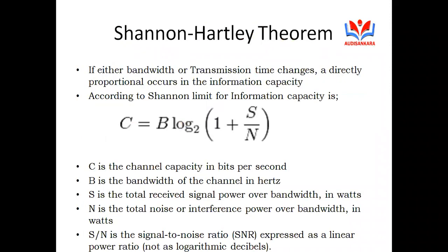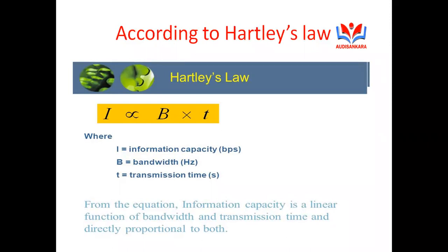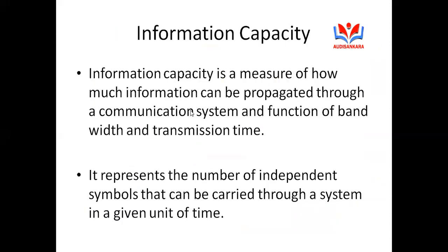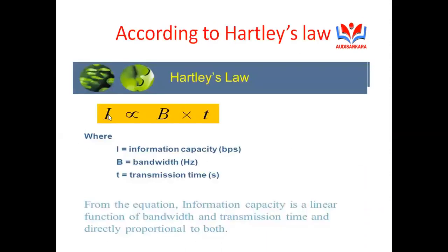The information capacity can be represented in two ways: first, Hartley's Law; and second, the Shannon theorem. Both Hartley and Shannon are scientists who measured information capacity in different ways. According to Hartley's Law, the information capacity I is directly proportional to B multiplied by T — that is, I is directly proportional to B × T, meaning information capacity is directly proportional to the product of bandwidth and time.